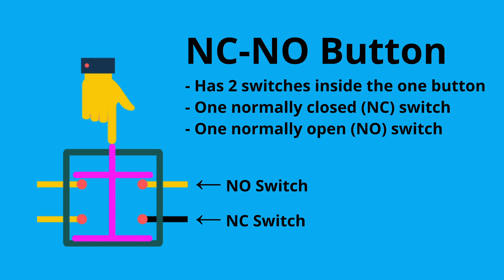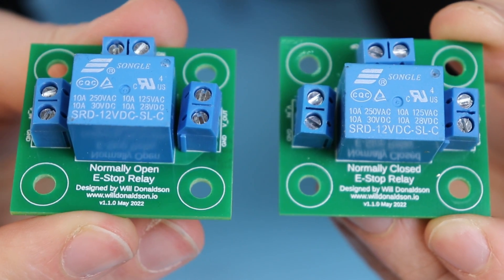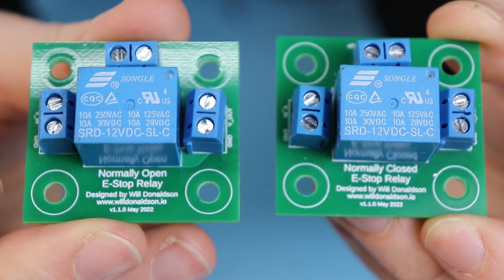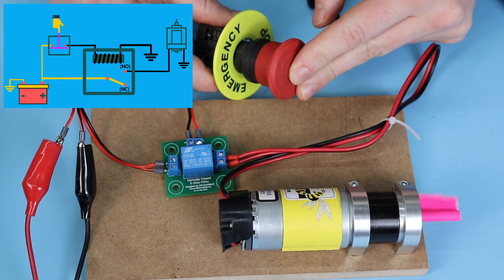Finally, you can also have normally open, normally closed emergency stop buttons, which have one of each type of switch. But what type of emergency stop button should you be using? If I was to make a tier list, this is what it would look like. My first PCB only used a normally closed emergency stop button. And while this worked well, there is an edge case where it may fail.